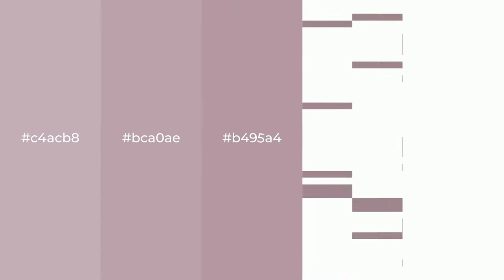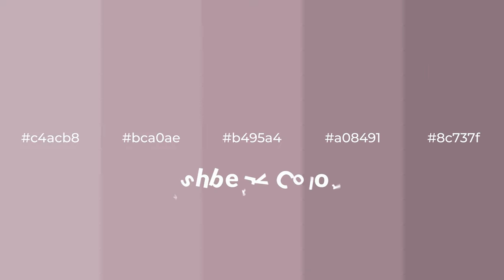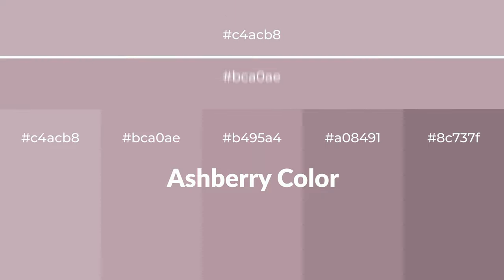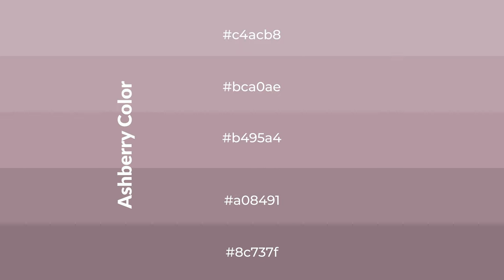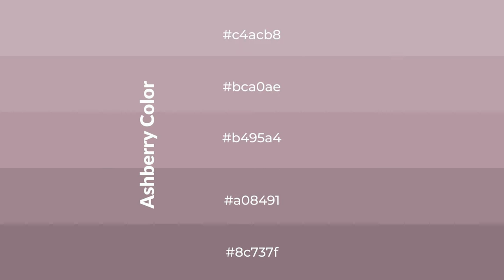Warm shades of ashberry color with violet hue for your next project. To generate tints of a color, we add white to the color. Tints create light and exquisite emotions. To generate shades of a color, we add black to the color, and it is used in patterns, 3D effects, and layers. Shades create depth and drama.